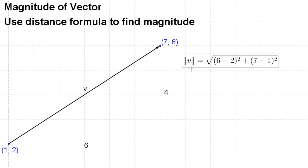So the magnitude of vector v, which you'll recall as the double bars, is the square root of (y₂ - y₁)² plus (x₂ - x₁)². That's (6 - 2)² plus (7 - 1)². In other words, it's the vertical distance squared plus the horizontal distance squared, and then we take the square root of that. When we simplify, that becomes the square root of 4² + 6².